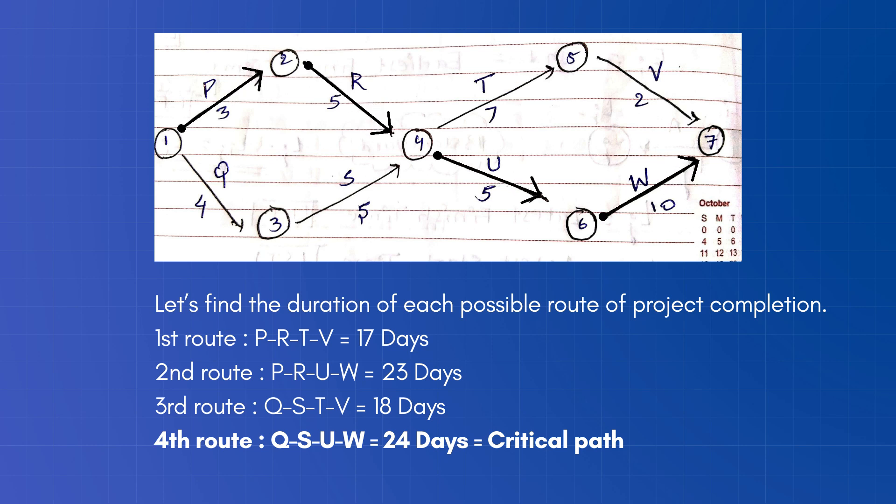The second route is P, R, U, W. In this route, 23 days will be consumed.